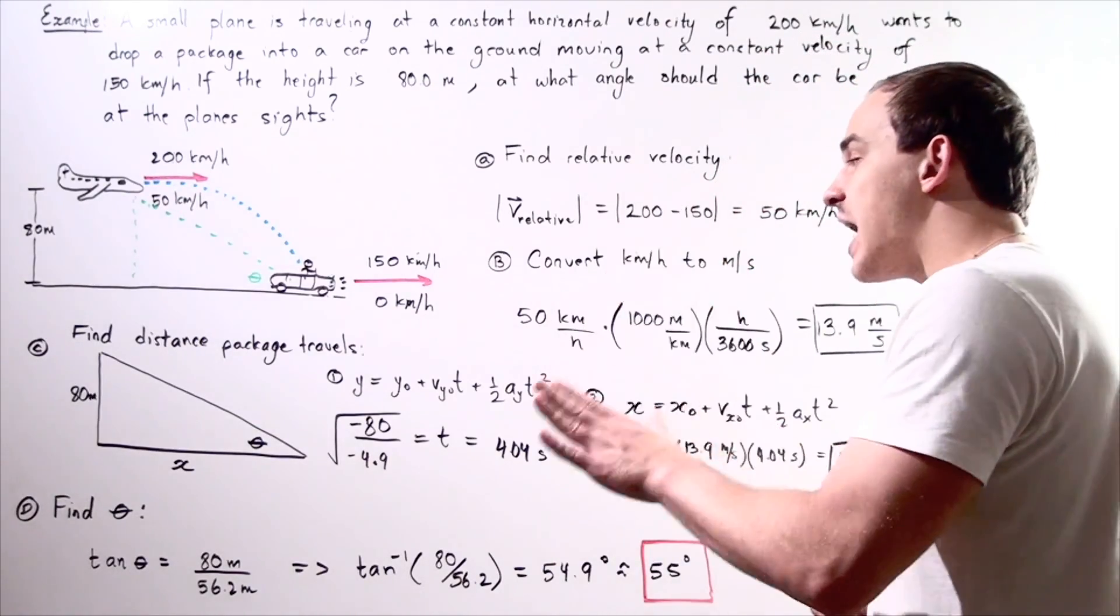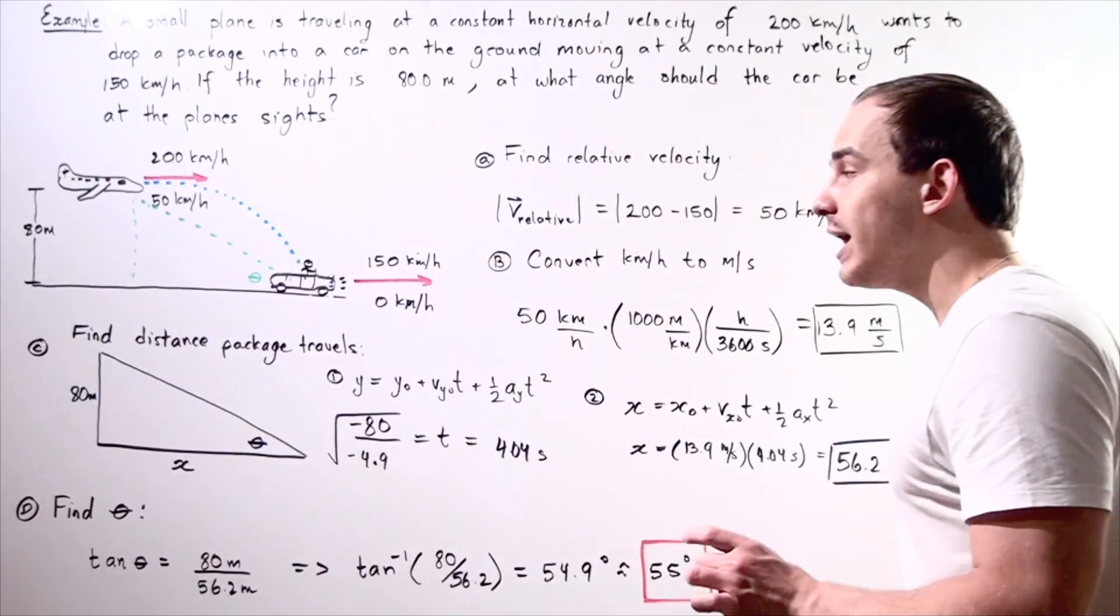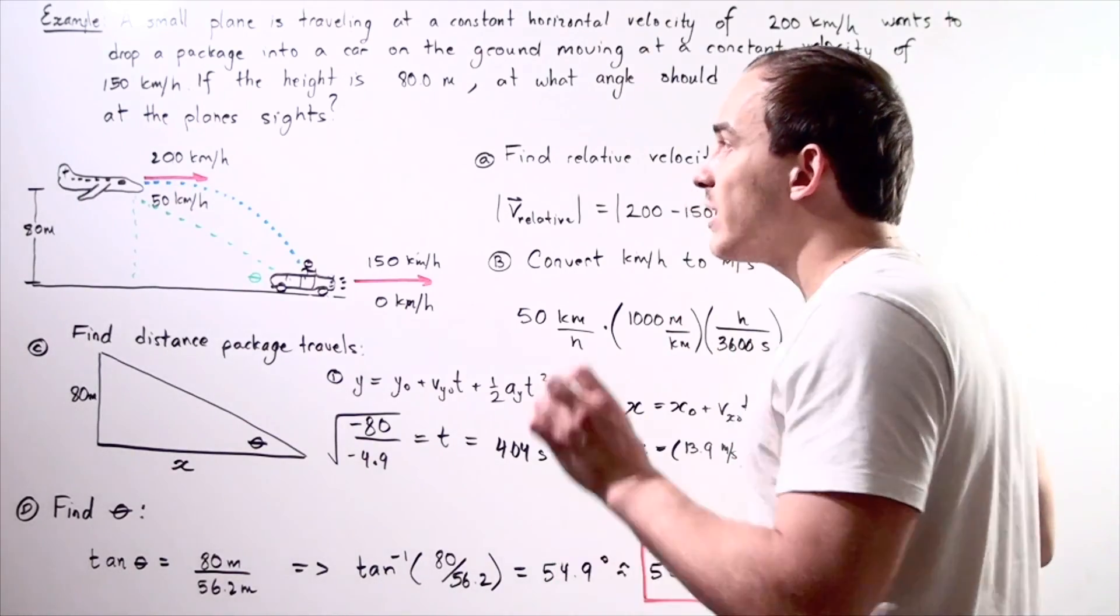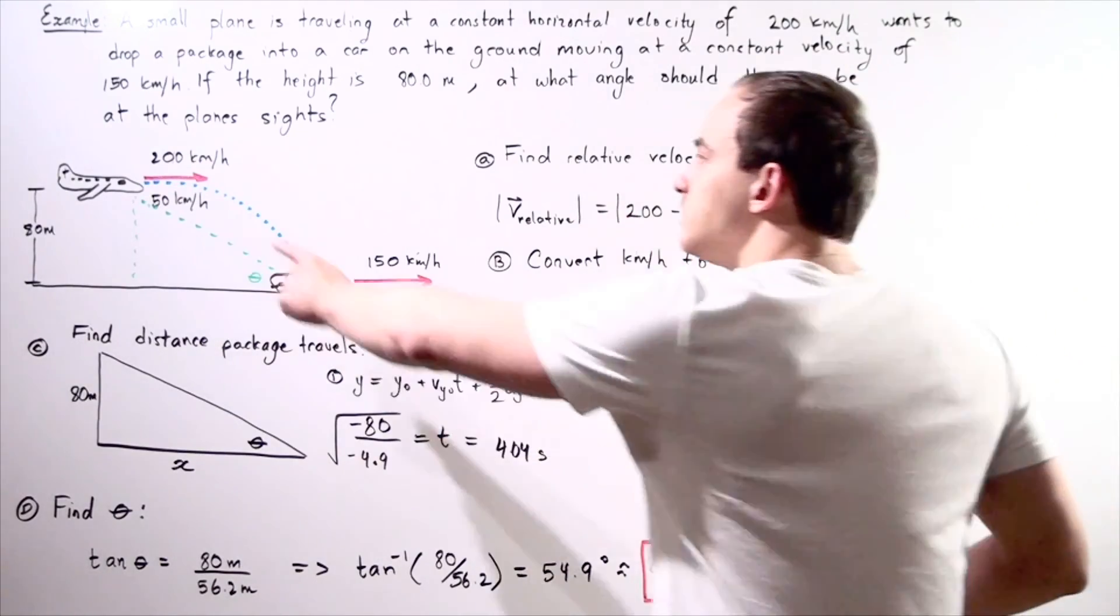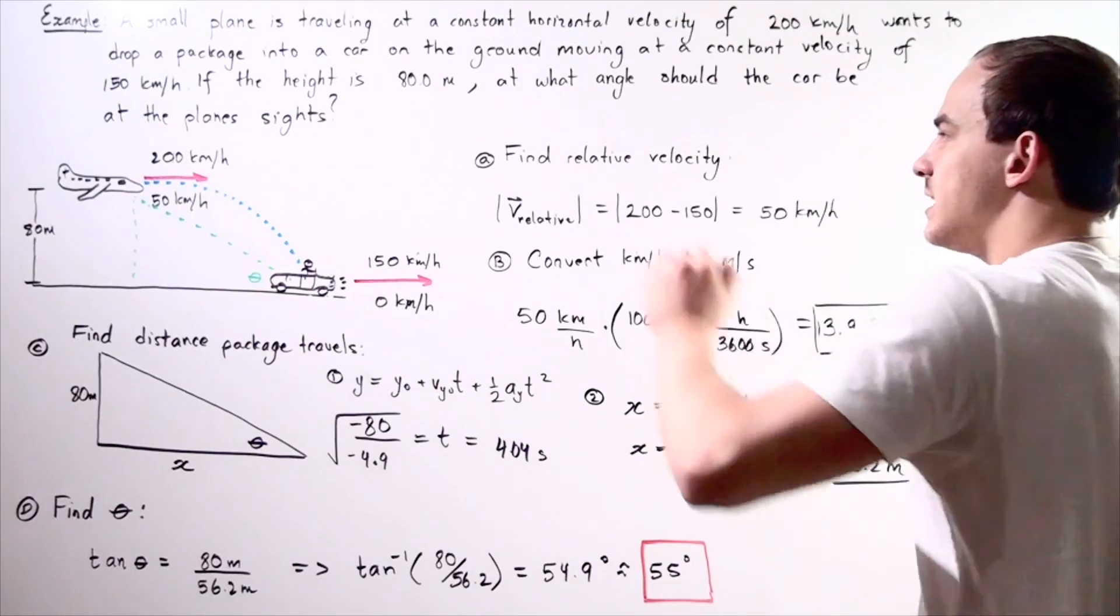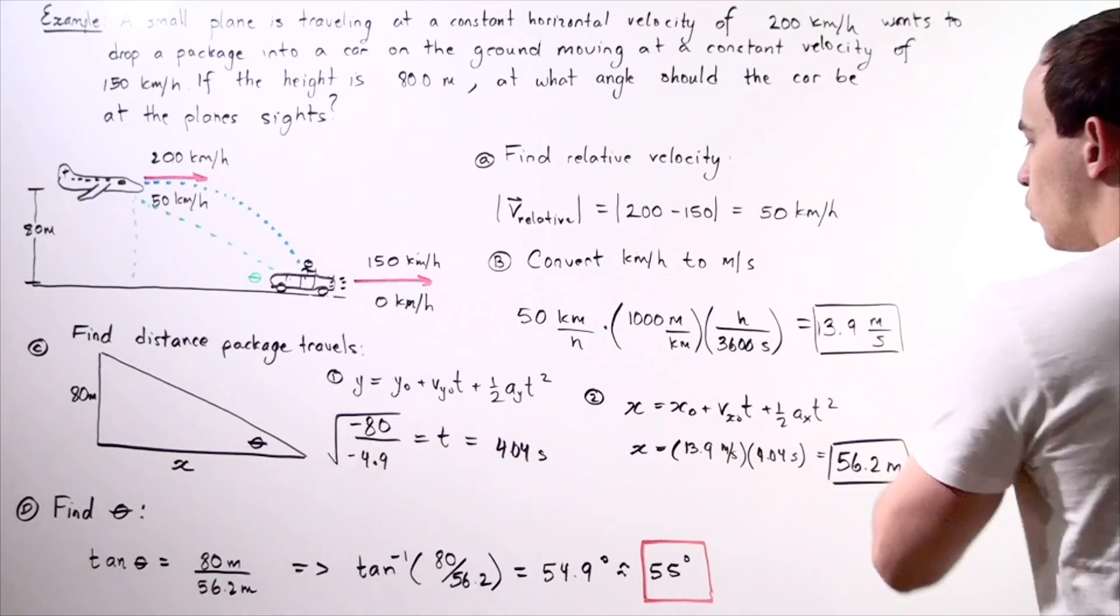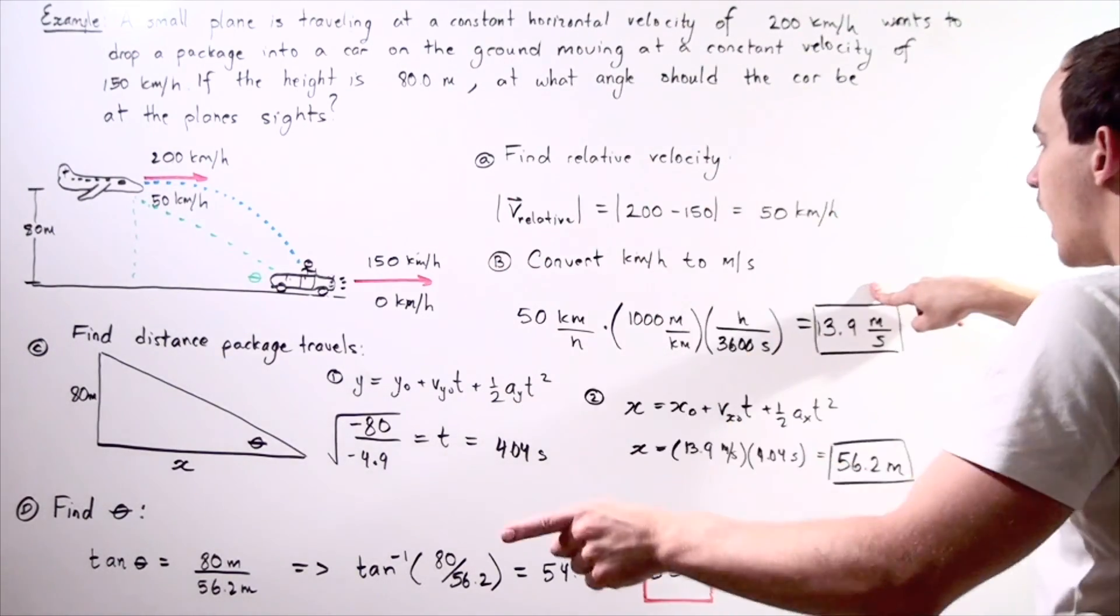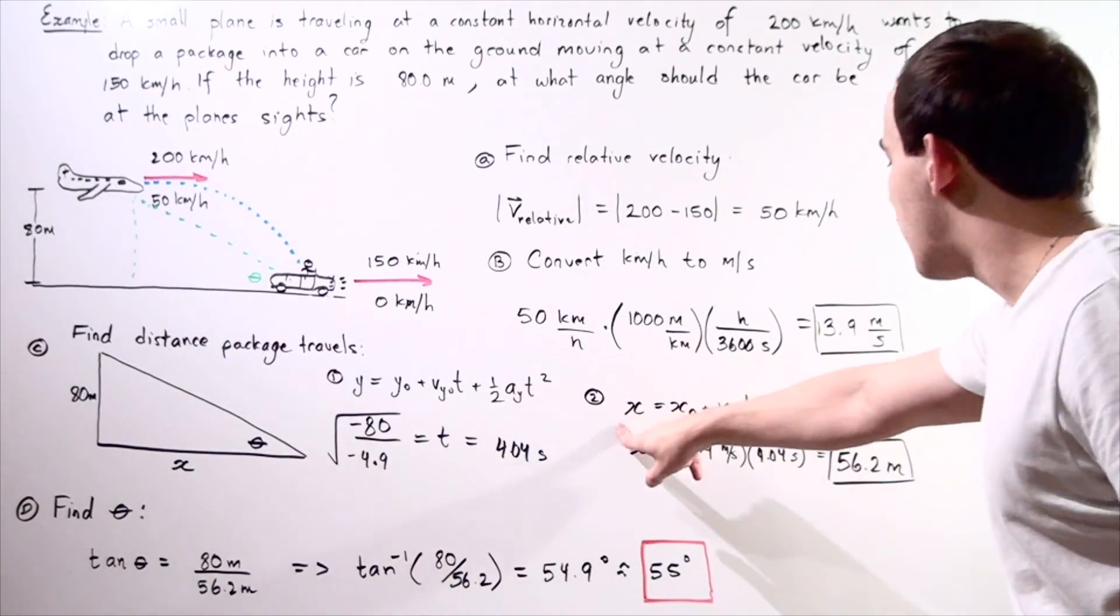Now, knowing how much time it spends in the air, we can calculate the distance along the x-axis knowing our initial horizontal velocity of the package. So our initial horizontal velocity of the package is exactly identical to that of the plane. So we calculated that our relative velocity of the plane was 13.9 meters per second. So this is exactly what number we used. Now, this number stays constant throughout the flight because our x-direction acceleration is 0. So we use the following equation.